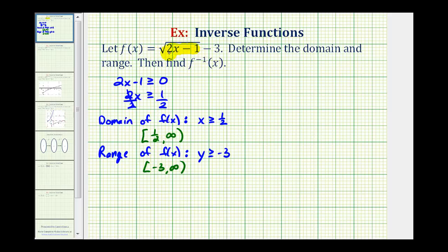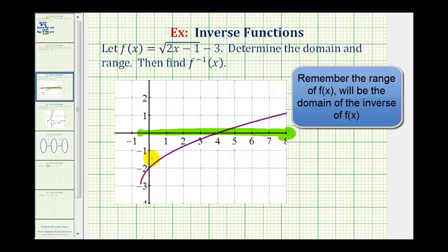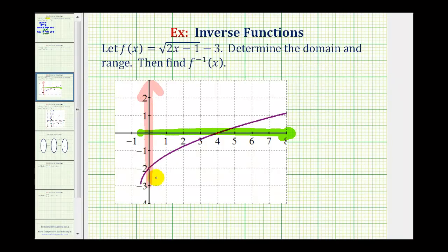Let's go ahead and verify this by graphing the original function. If we were to project this onto the x-axis, notice how the x values would be from 1 half to infinity. And if we projected this onto the y-axis, notice how the values would be from negative 3 to positive infinity. So we have the domain and range correct.